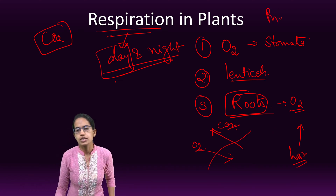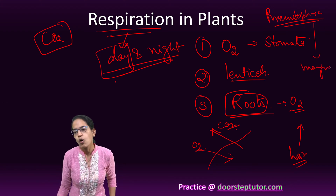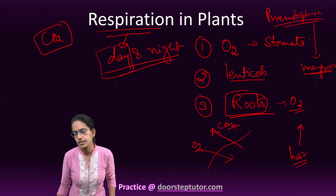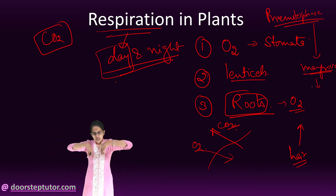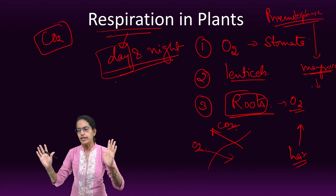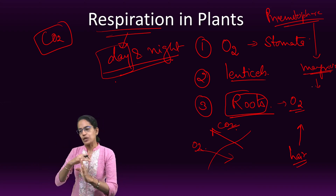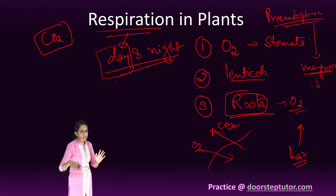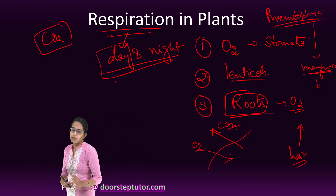One interesting concept in respiration is pneumatophores. Pneumatophores occur in mangroves or saline soil plants and are called respiratory roots. Rather than roots going down, these roots come up. As they emerge out of the waterlogged soil, these roots bear lenticels and are able to exchange gases. As a result, respiration in mangrove plants occurs through pneumatophores.